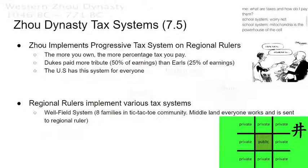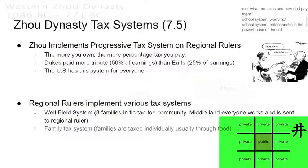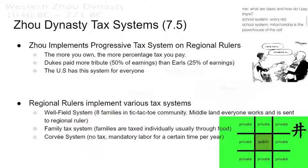They had different systems. They could implement a wellfield system where eight families are in a tic-tac-toe community arrangement — eight private land plots, and in the middle land every family works together, and whatever crops are grown on that middle public land are sent to the regional ruler as tax. Regional rulers could also use a family tax system where families are taxed individually, usually as a food tax. Or they could use a corvée system in which there's no conventional tax, but each person had to do mandatory labor for a certain time per year.